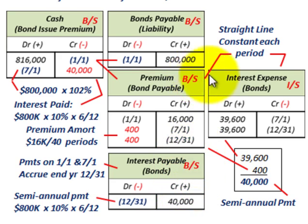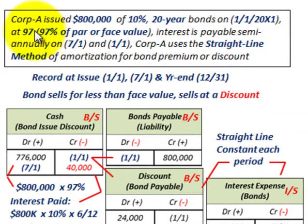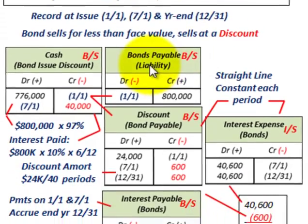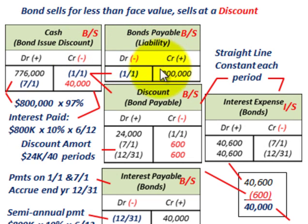Now let's look at the discount scenario. Same example: Corporation A issues $800,000, 10%, 20-year bonds, but this time at 97. That means we take 97% of the par or face value of $800,000. This is where the bond sells for less than the face value — it sells at a discount. We set up accounts for cash, bonds payable, discount on bonds payable, interest expense, and interest payable.